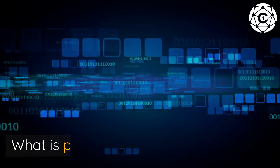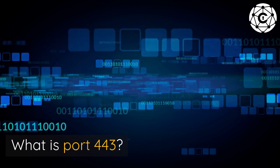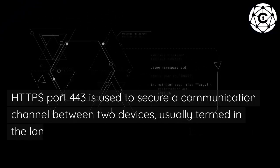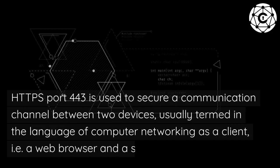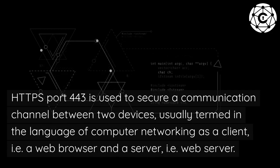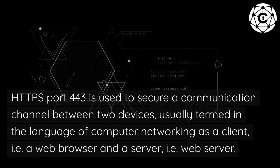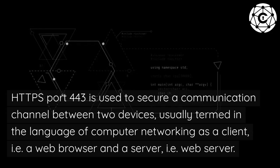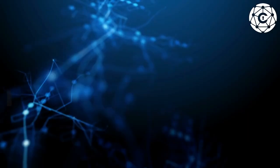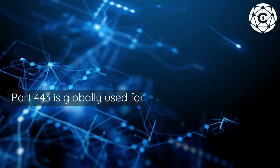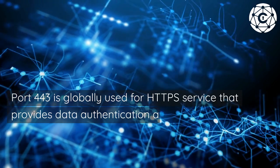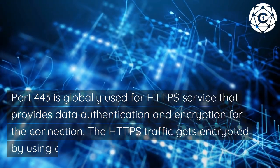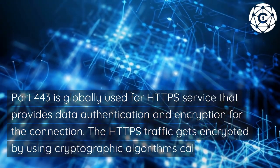What is port 443? HTTPS port 443 is used to secure a communication channel between two devices, usually termed in the language of computer networking as a client — i.e., a web browser — and a server — i.e., a web server. Port 443 is globally used for HTTPS service that provides data authentication and encryption for the connection.